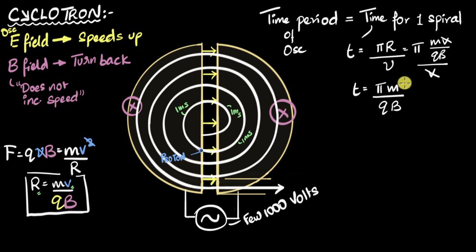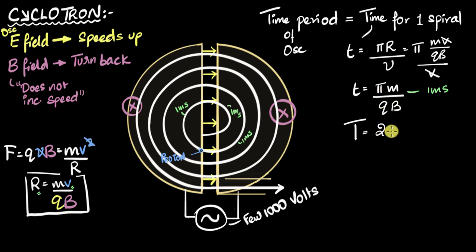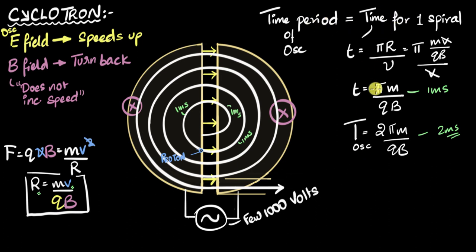The time only depends upon the mass, the charge, and the magnetic field, which are all constants. As the proton spirals out, that does not change. So in our example this is one millisecond, and the time taken for the next half circle is also exactly the same. Therefore, the total time it takes to finish one full spiral is twice this value — two pi m divided by qB — which is two milliseconds in our example. And the same thing will be true for every spiral.